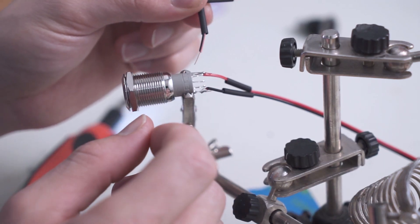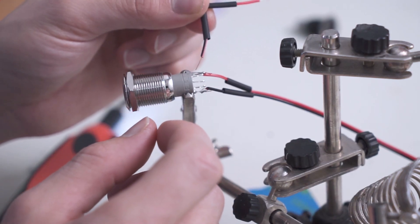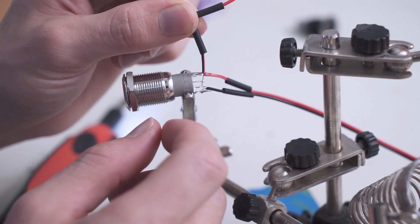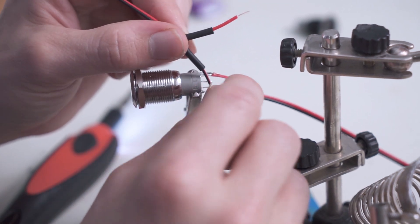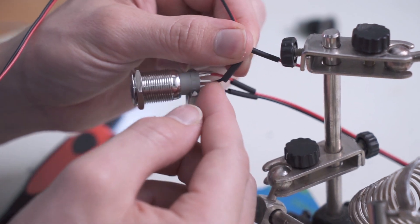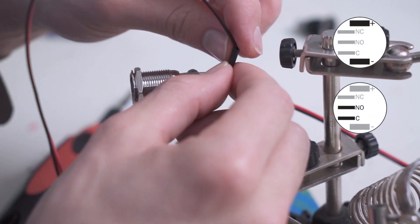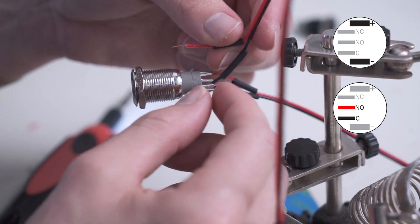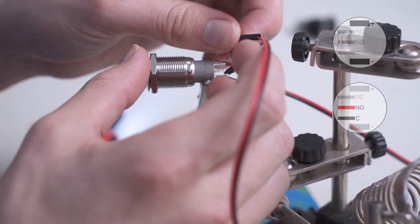Polarity does not matter for a momentary switch, but I'm going to put the black wire on the C1 or GND if it's marked as such on your switch. And right next to it is the NO for normally open. I'm going to connect the red wire to that.